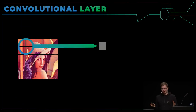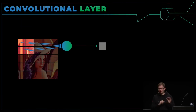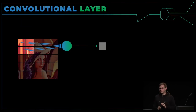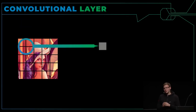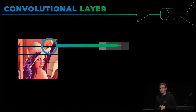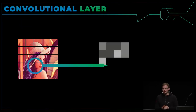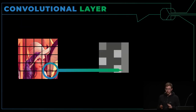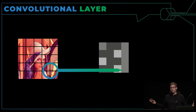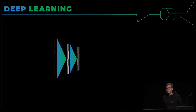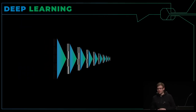Das kann man verbessern, indem man einen Zwischenschritt macht — indem man eine zusätzliche Ebene hinzufügt. Da schaut man sich vier Eingabewerte an. Dasselbe Netzwerk wird dann auch wieder um einen Pixel nach rechts geschoben und so weiter, sodass wir quasi ein 2D-Bild erzeugen, das Informationen über die Nachbarschaftsbeziehungen behält. Und wir haben eine sehr kleine Anzahl an Gewichten, nicht wie die große Anzahl von Parametern, die wir vorhin hatten.